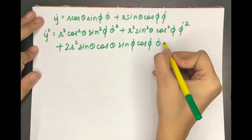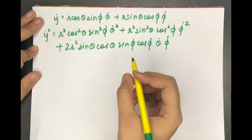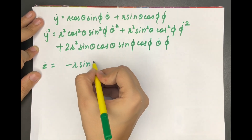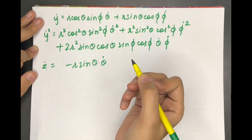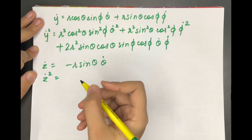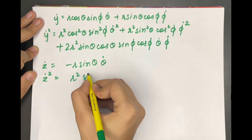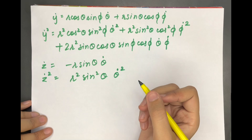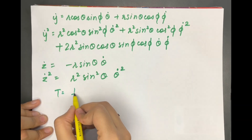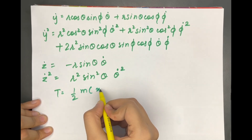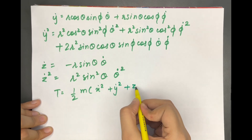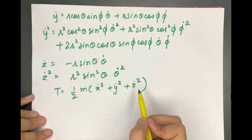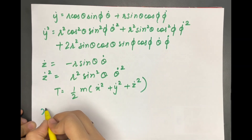Now ż = −r sinθ θ̇, so ż² = r² sin²θ θ̇². We now have to calculate kinetic energy T = ½m(ẋ² + ẏ² + ż²), so we add all three quantities ẋ², ẏ², and ż².